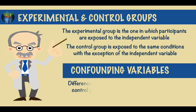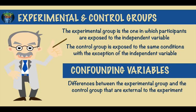Confounding variables refer to the differences between the experimental group and the control group that are external to the experiment. These can have an unwanted influence on the outcome of an experiment.